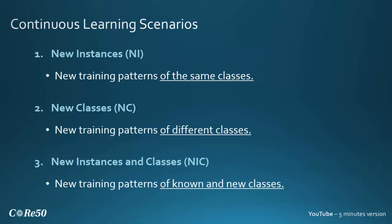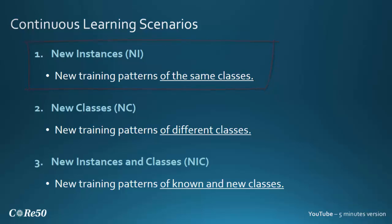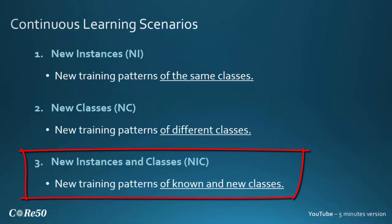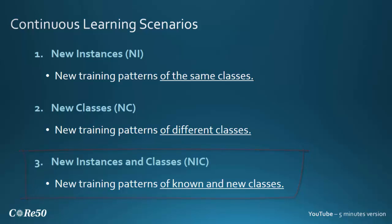With the dataset we are also releasing a benchmark in which we design three major continuous learning scenarios. In the first one, New Instances, what we encounter in the incremental batches are new examples of the same classes. In the second one, what we encounter are new training patterns of new classes that we have never seen before. And in the third we can get both examples of known and unknown classes.